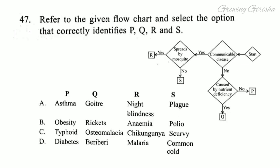Question 47. Refer to the given flow chart and select the option that correctly identifies P, Q, R, and S. Answer is option D: Diabetes, beriberi, malaria, common cold.